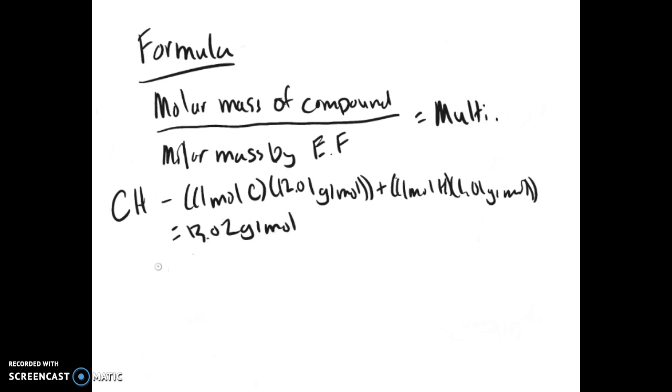Now let's say the specific compound you're talking about has a value 78.11 grams per mole. That's what the molar mass actually is. And you take it divided by your molar mass, which gives you a multiplier of 5.999, which is 6. So that means the molecular formula is C6H6.